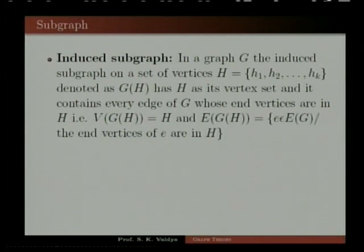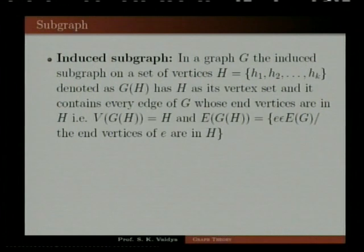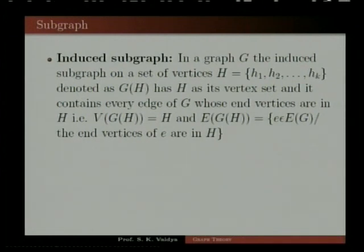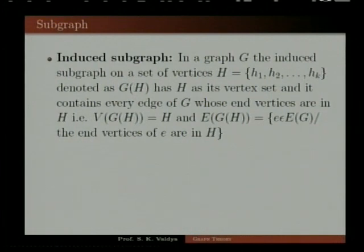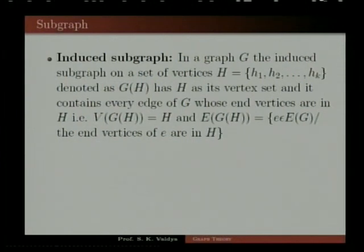We will now learn two special types of sub-graphs. The first type is the induced sub-graph. In a graph G, the induced sub-graph on a set of vertices H = {H1, H2, ..., Hk}, denoted G(H), has H as its vertex set and contains every edge of G whose end vertices are both in H. The vertex set of G(H) is H, and the edge set of G(H) is the set of all edges whose end vertices are in H.